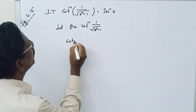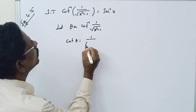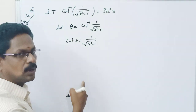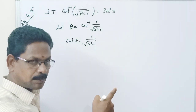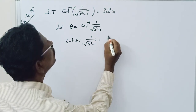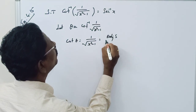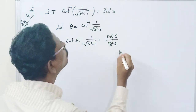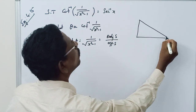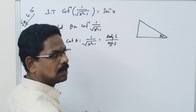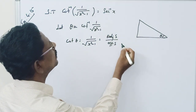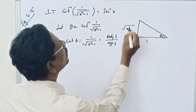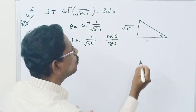So cot theta equals 1 by root of x squared minus 1. Tan theta is opposite side by adjacent side, so cot theta is adjacent side by opposite side. Draw one triangle with angle theta, where the adjacent side is 1 and the opposite side is square root of x squared minus 1.